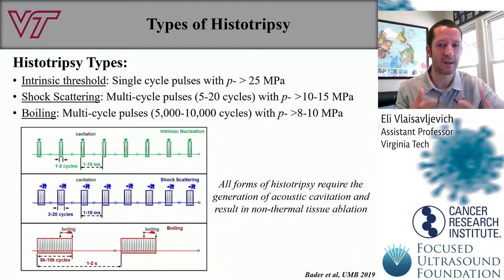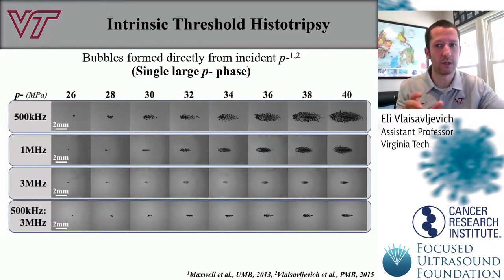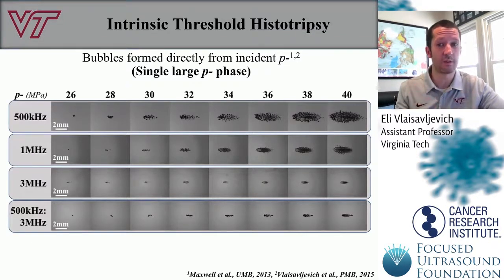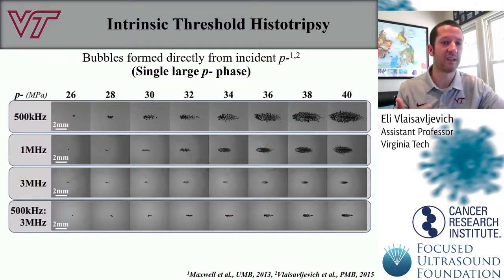It's a non-thermal mechanical effect generated from bubbles formed at the focus of the transducer. In intrinsic threshold histotripsy — also referred to as microtripsy in the literature — these single cycle pulses are used to generate a precise and dense cavitation bubble cloud that can be tailored based on the acoustic parameters. This gives us high precision, so we can match the size of this bubble cloud as well as other properties to selectively tailor treatments for different targets of interest.